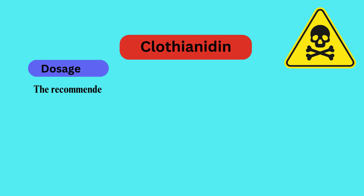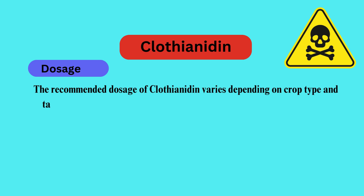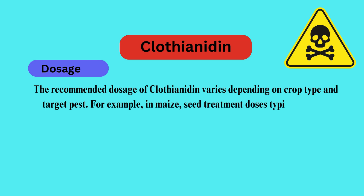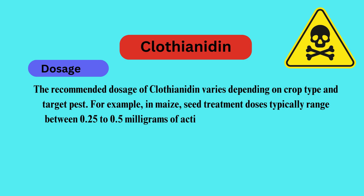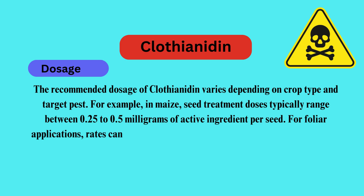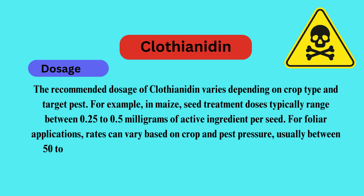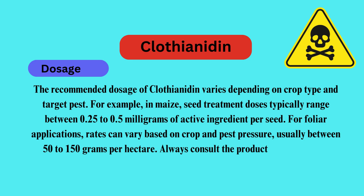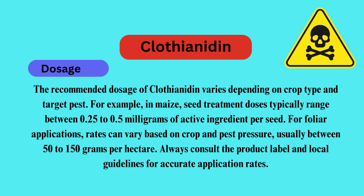The recommended dosage of Clothianidin varies depending on crop type and target pest. For example, in maize, seed treatment doses typically range between 0.25 to 0.5 milligrams of active ingredient per seed. For foliar applications, rates can vary based on crop and pest pressure, usually between 50 to 150 grams per hectare. Always consult the product label and local guidelines for accurate application rates.